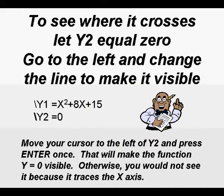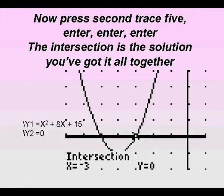To see where it crosses the y2 equals zero, go to the left and change the line to make it visible. Now press second trace five — enter, enter, enter.